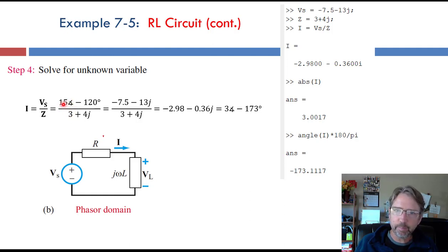Since we're dividing, maybe polar form would be easier because we can just divide the amplitudes and subtract the phases. If we use a calculator, then maybe rectangular is easier.